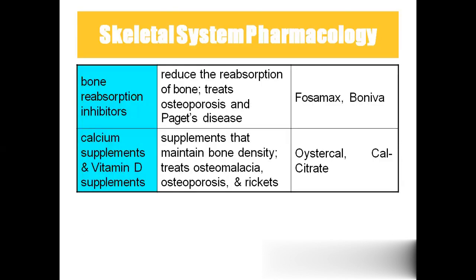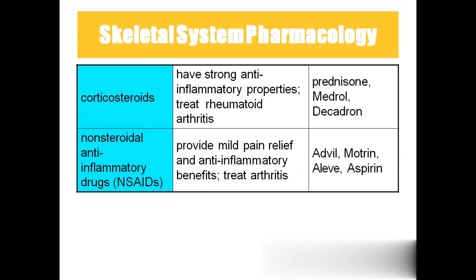In pharmacology: bone resorption inhibitors reduce bone resorption and are used to treat osteoporosis and Paget's disease. Calcium and vitamin D supplementation increases bone density, treating osteomalacia, osteoporosis, and rickets. Corticosteroids are given for inflammation, particularly for rheumatoid arthritis and osteoarthritis. Non-steroidal anti-inflammatory drugs (NSAIDs) are given for pain relief in arthritic patients.